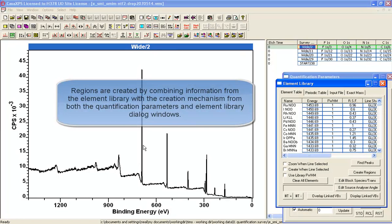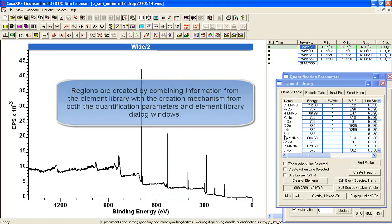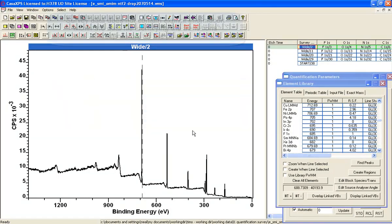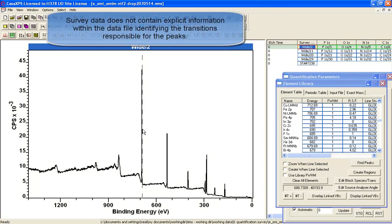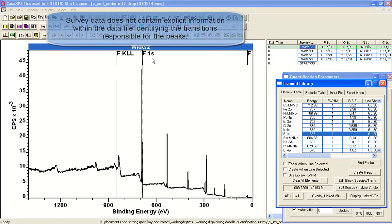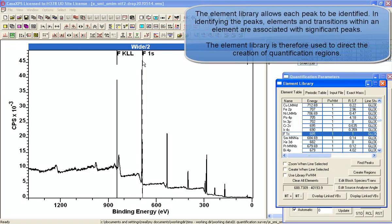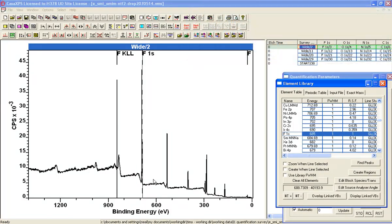The first thing we need to do is identify the peaks that we see here. So I've clicked on the peak, the largest peak, and it's most likely going to be Fluorine 1S. I can now see that I've put up markers that correspond to the Fluorine 1S as an Auger peak that matches it, so that's probably Fluorine.